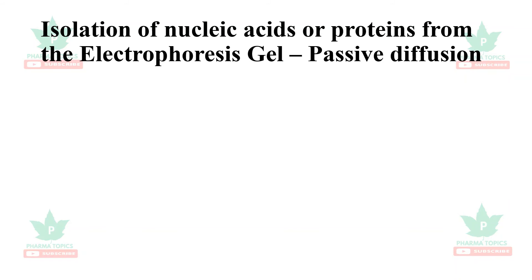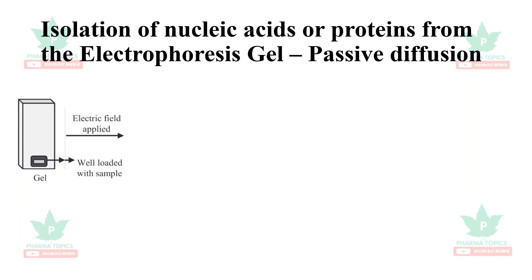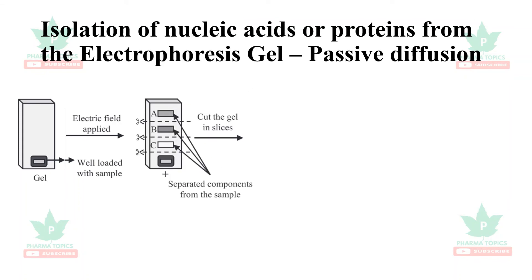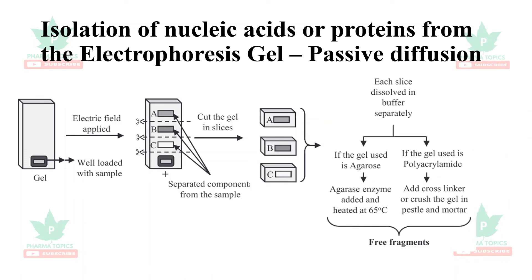For isolation of nucleic acids or proteins from the gel after electrophoresis, one technique is passive diffusion. After the gel runs and separates components, different bands are cut into gel slices. Each slice is dissolved in a separate buffer. If agarose gel was used, agarase enzyme breaks the agarose bonds, heated at 65°C. If polyacrylamide gel was used, the gel slice is crushed in a mortar and pestle to release free DNA or RNA fragments.